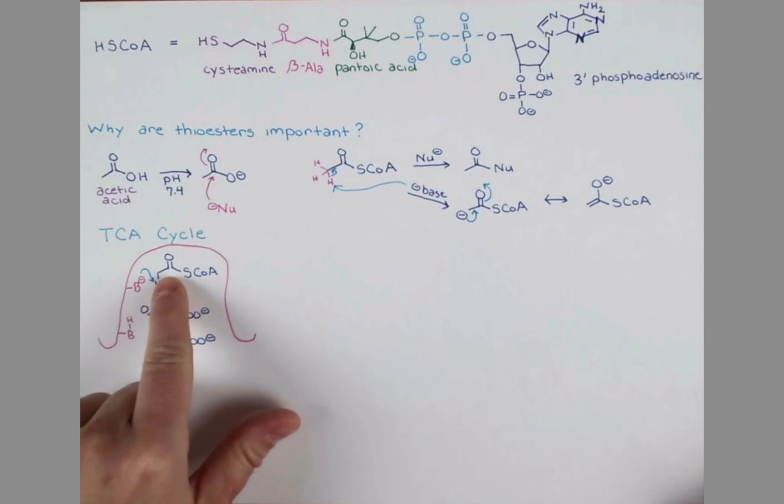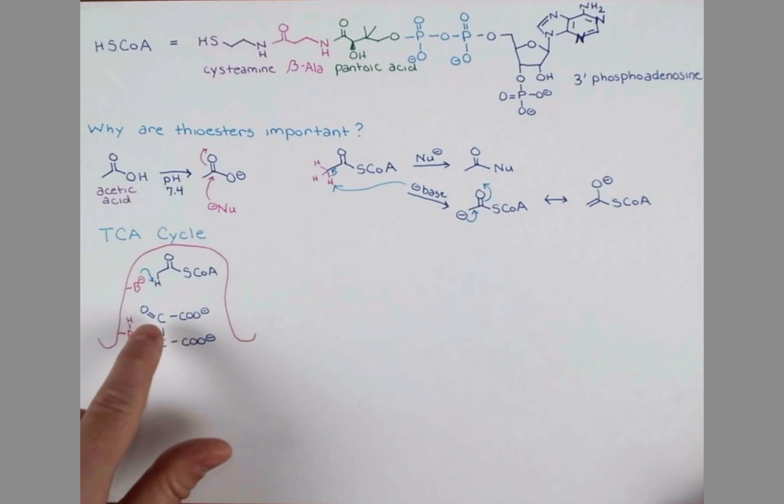This basic residue is going to remove this proton. The electrons that would be left behind to form the enolate can attack now. So I'm showing this deprotonation and I'm simultaneously going to show the enolate attacking the carbonyl. The double bond to the oxygen will open up, accepting a proton from this proton donor. This will give us an intermediate.